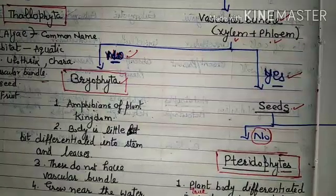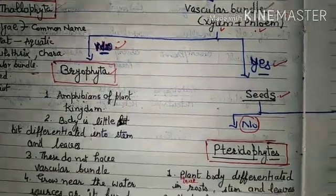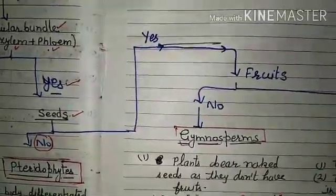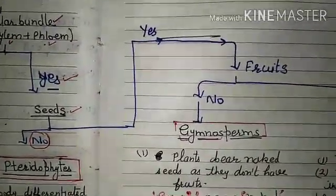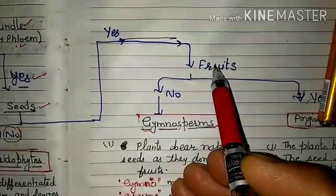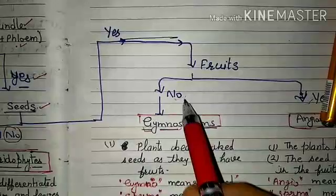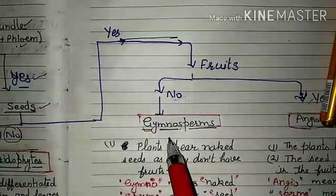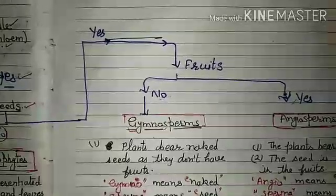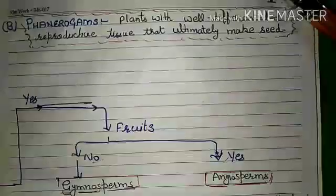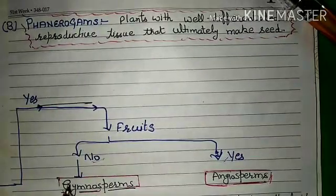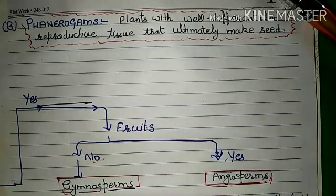If seeds are present, the plant belongs to Phanerogamia. We then check whether fruit is present or not. If there is no fruit, the plant is a Gymnosperm. If fruit is present, the plant is an Angiosperm. This is the general classification of Phanerogamia into Gymnosperms and Angiosperms.